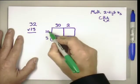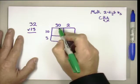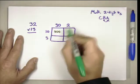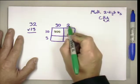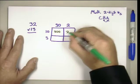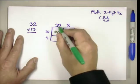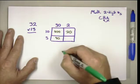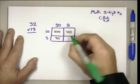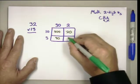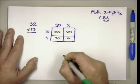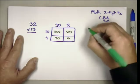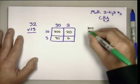Tens times tens is hundreds, and three times one is three, so that gives us three hundreds. Tens times one is tens, and two times one is two, so that's two tens. Ones times tens is tens, three times three is nine, so that's nine tens. And ones times one is ones, three times two is six, so that's six ones.